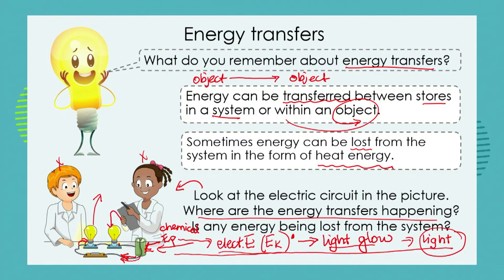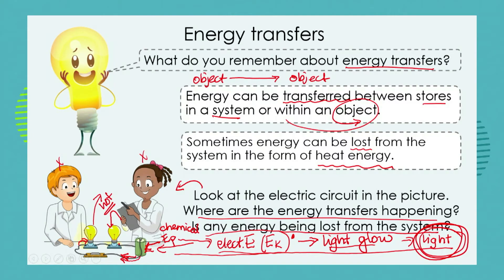But what if we touched that light bulb? It would feel hot. In other words, we've got some energy being lost from the system. We don't light up an electric light bulb to keep ourselves warm — we light it up to produce light energy. But in the process of producing what we want from the system, we also produce some heat energy. We say that heat is lost from the system. It's wasteful. It's not helping us at all.